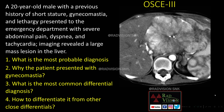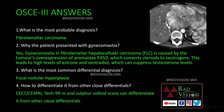Next case — OSCE 3: a 20-year-old male with a history of short stature and gynecomastia, now presenting with abdominal pain, dyspnea, and tachycardia. You can see a lobulated, heterogeneously enhancing lesion with a central hypodense scar showing calcifications, predominantly involving the left lobe of the liver. The most probable diagnosis in this case is fibrolamellar carcinoma.